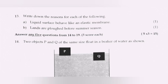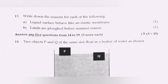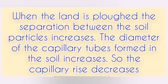Question 13: Write down the reason for each of the following. (a) Liquid surface behaves like an elastic membrane. Answer: due to surface tension. (b) Lands are ploughed before summer season. Answer: capillary rise is inversely proportional to the diameter. When the land is ploughed, the separation between soil particles increases, the diameter of capillary tubes formed in the soil increases, so the capillary rise decreases.